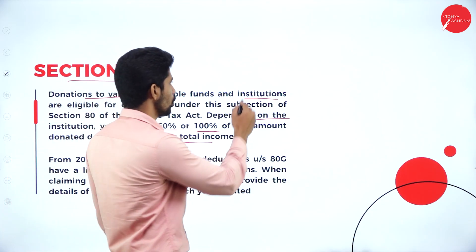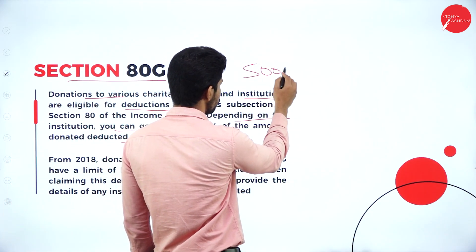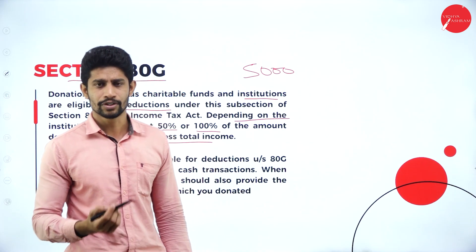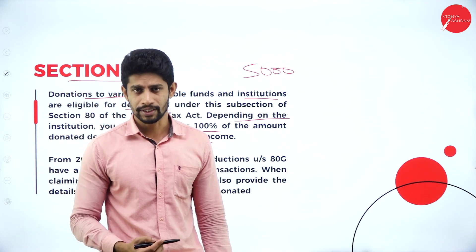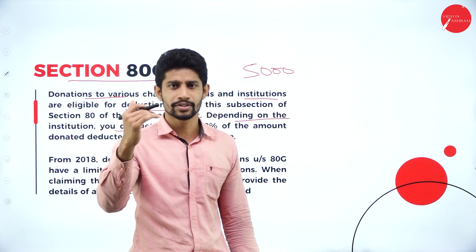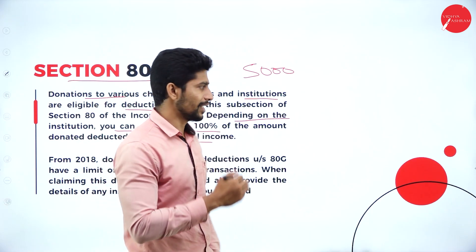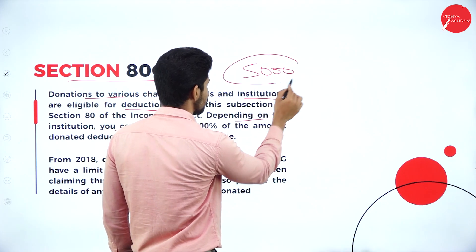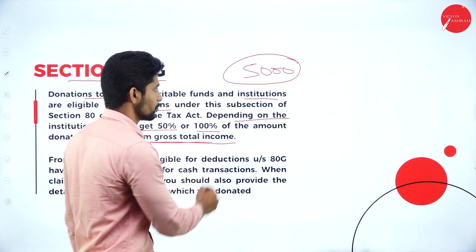For example, if you are giving 5,000 rupees of donation to an institution, based on the nature of the institution and whether it comes under the 100% deduction or 50% deduction category, you can take the deduction of that 5,000 rupees from your gross total income.